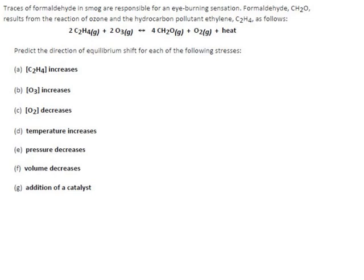Pressure decreases. How many moles of gas do we have here? Two here plus two here is four. Four here plus one here is five. So there's more gas on the right side. If the pressure decreases, that means we're relaxing the pressure, we're letting the gas expand. It'll go to its bigger side, so it'll go to the right. We'll get more formaldehyde and oxygen. We'll get less ozone and ethene.